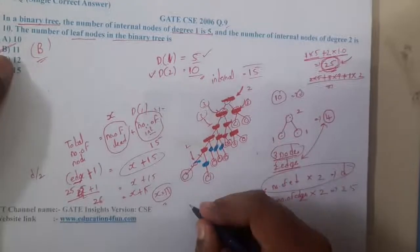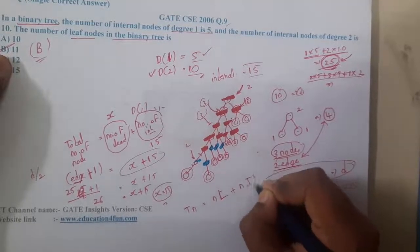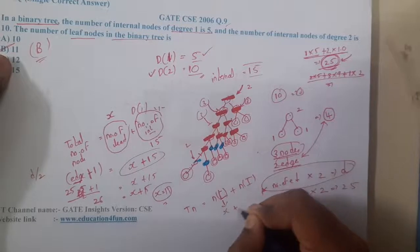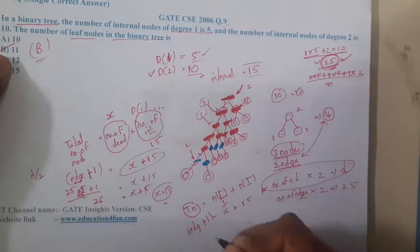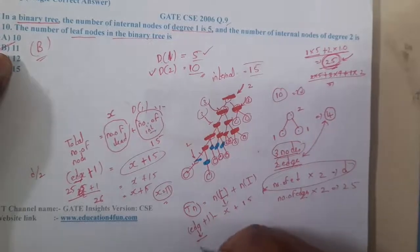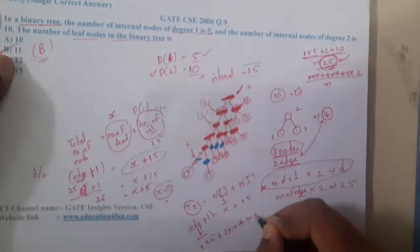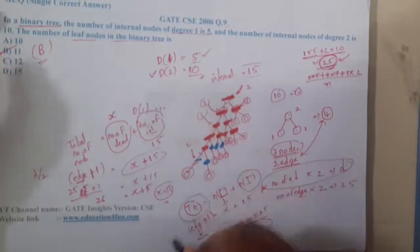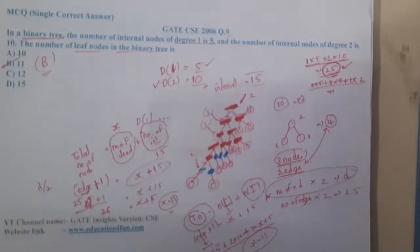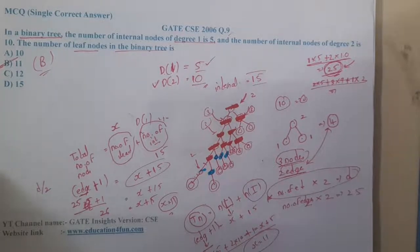To summarize the formula: total nodes = leaf nodes + internal nodes, and total nodes = edges + 1, where edges = (1 × number of degree-one nodes) + (2 × number of degree-two nodes). Applying: 1×5 + 2×10 + 1 = x + 15, giving x = 11. This approach works for any values. In the next lecture, let us continue with the next question. Thank you — like, share, and subscribe!